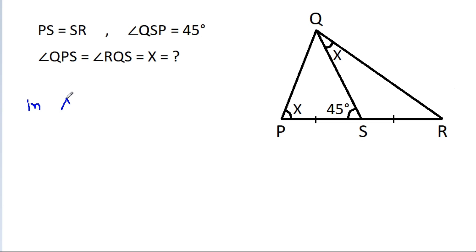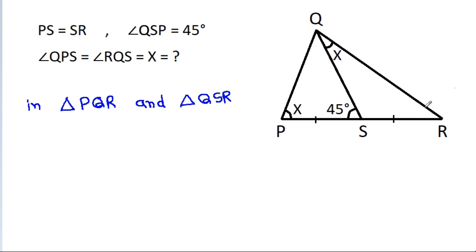In triangle PQR and triangle QSR, angle R is common and angle x is equal in both triangles. That means triangle PQR will be similar to triangle QSR.